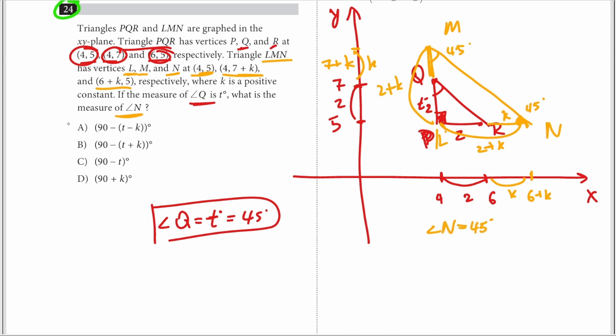Now looking through the multiple choices, while the problem is super complicated, if angle t is - well we know angle t is 45, but let's assume we didn't. 90 minus t is equal to 90 minus 45, so it's equal to 45, which is the same thing as angle N. So therefore the answer is C.